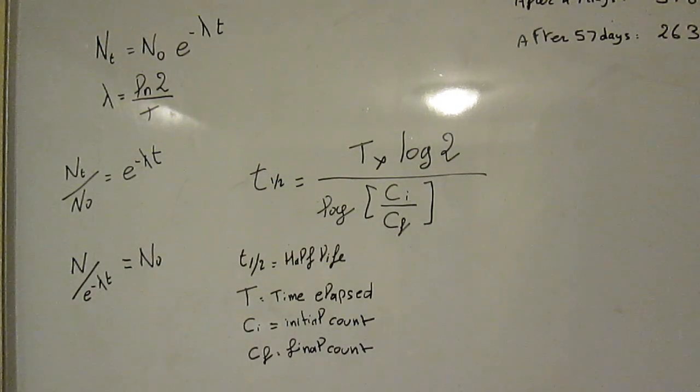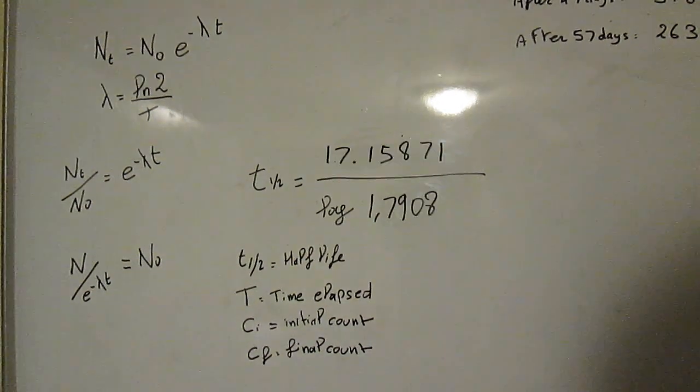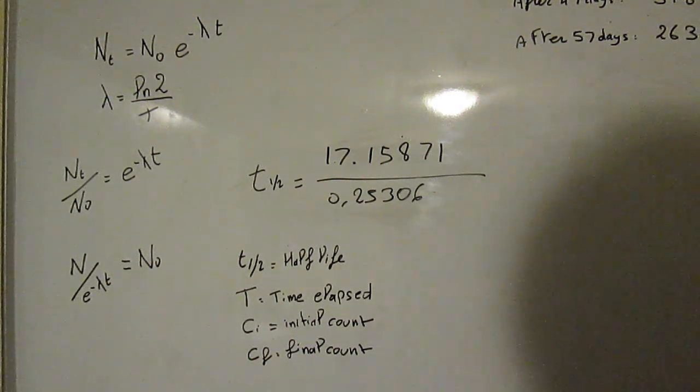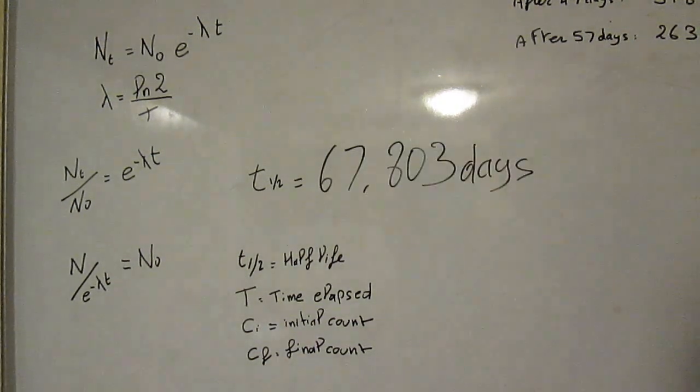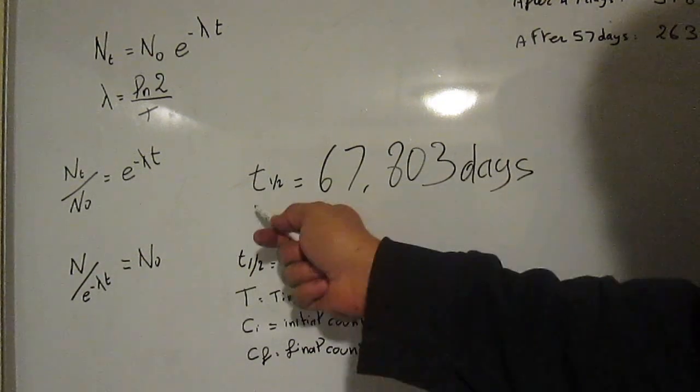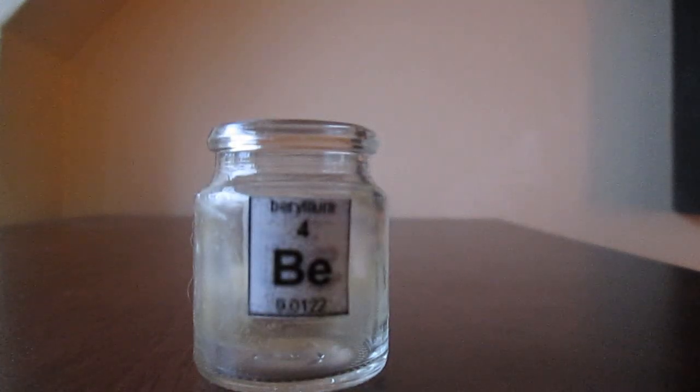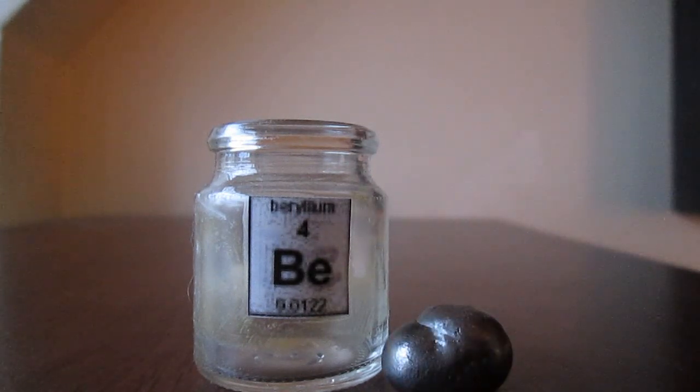I'll spare you the math, but here we can see what happens if you plug in the numbers in this equation that allows you to find out the half-life of any given radionuclide according to the original counts. We get to about 67 days, which is not too far from the theorized 53 days of beryllium-7. This is a rough estimate based on what I can calculate, and it's still pretty close.